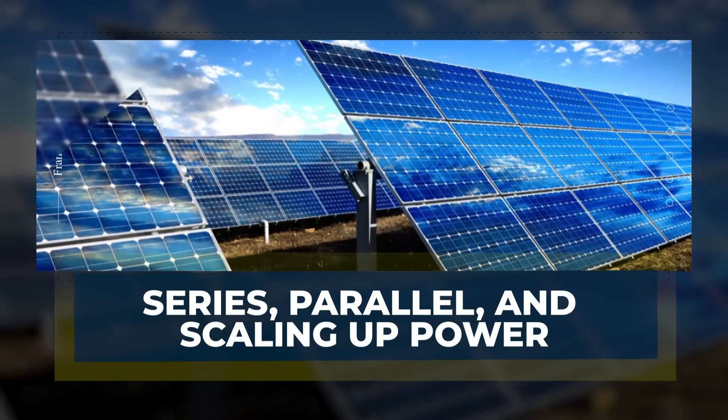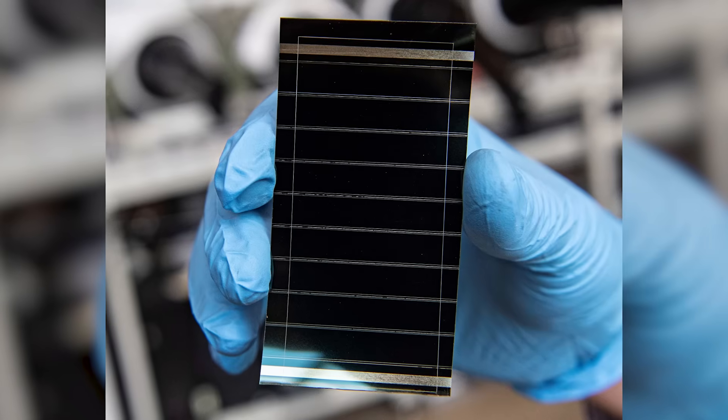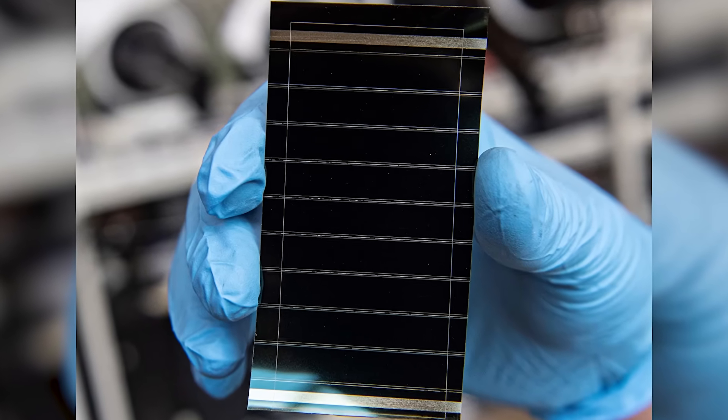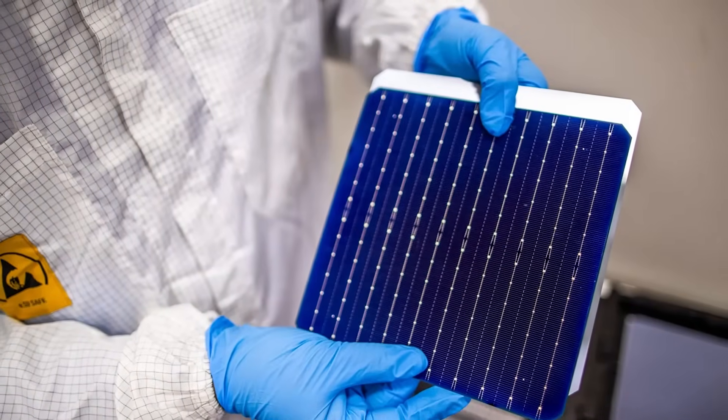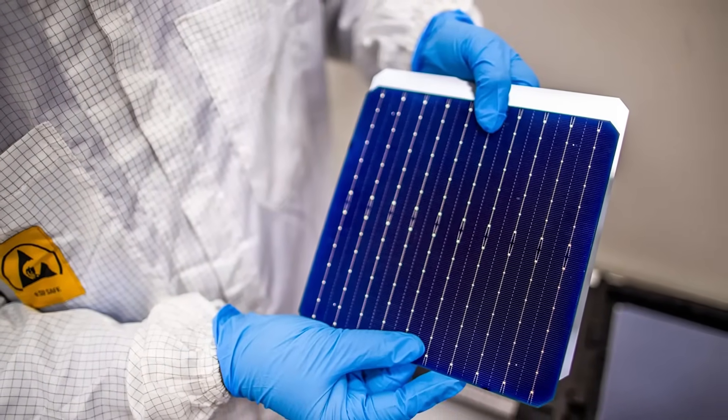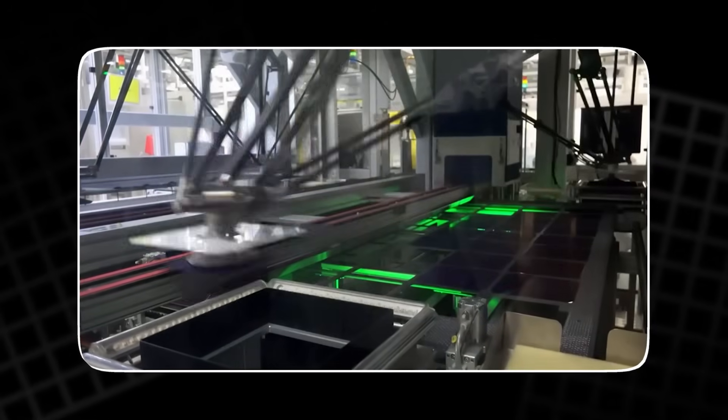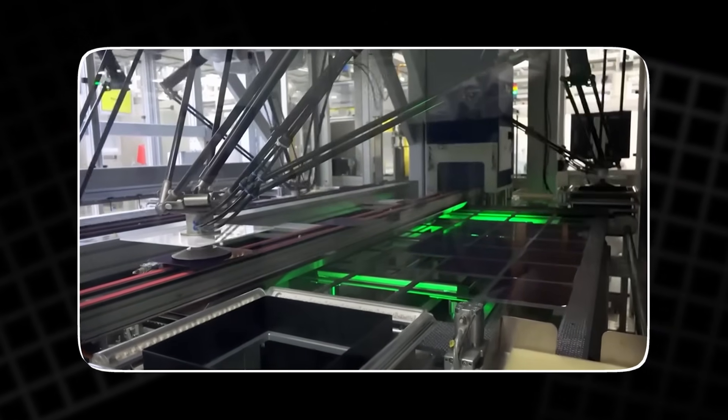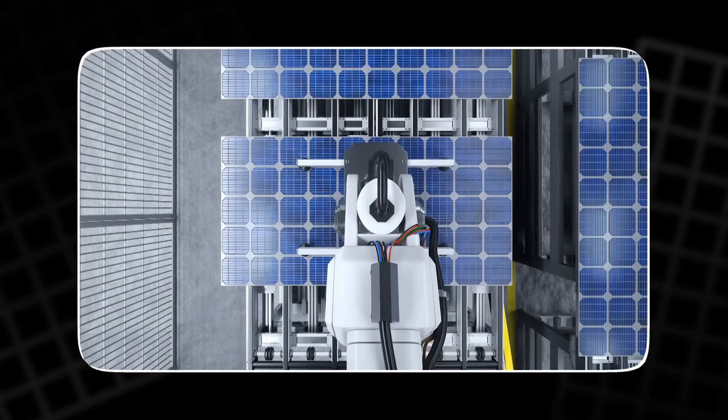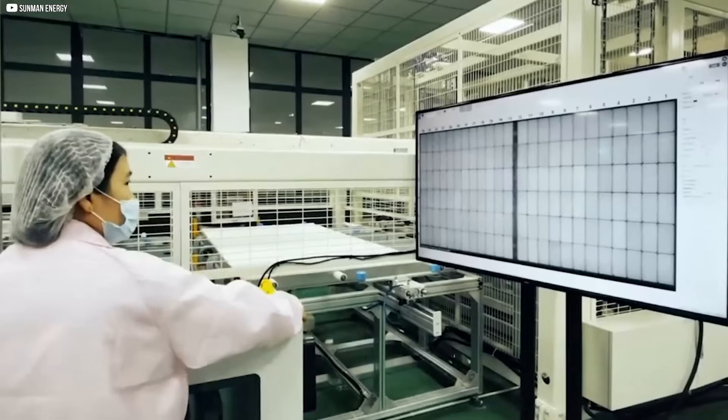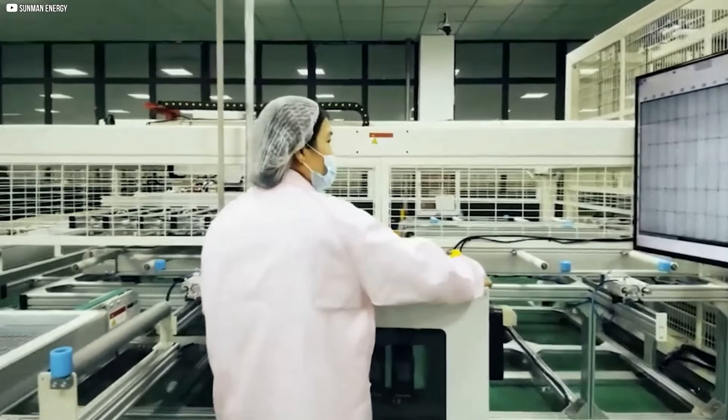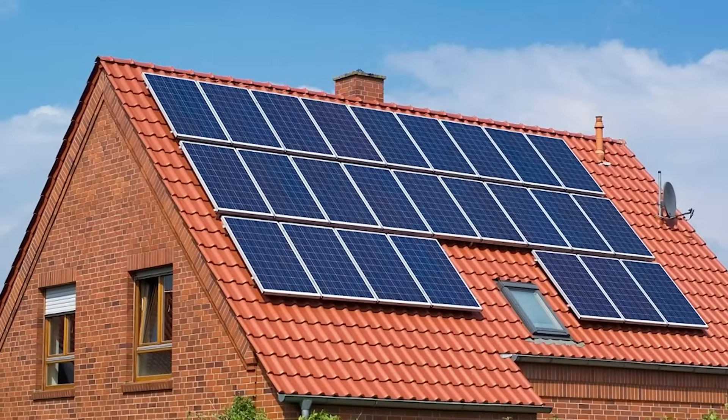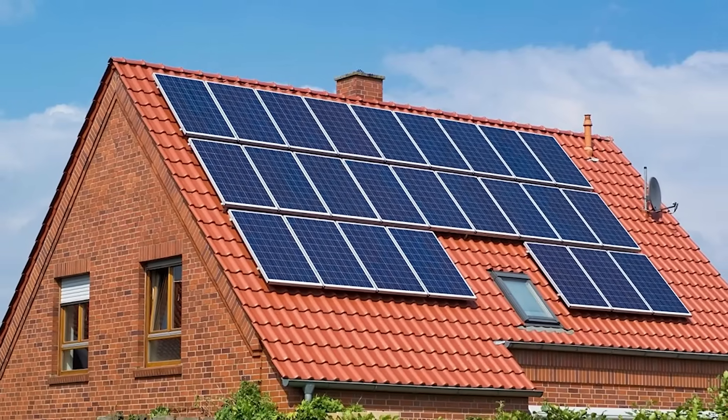Series, parallel, and scaling up power. A single solar cell can only produce about 0.5 volts, not nearly enough to power much of anything on its own. To get useful amounts of electricity, manufacturers connect multiple cells together. When cells are wired in series, their voltages add up. For example, stringing 60 cells in a row creates around 30 volts. This setup is common in residential solar panels.